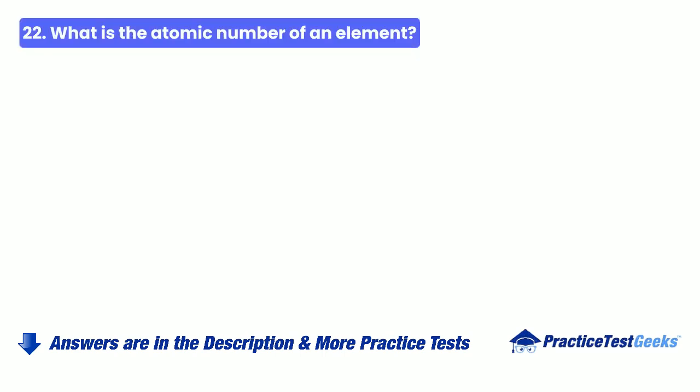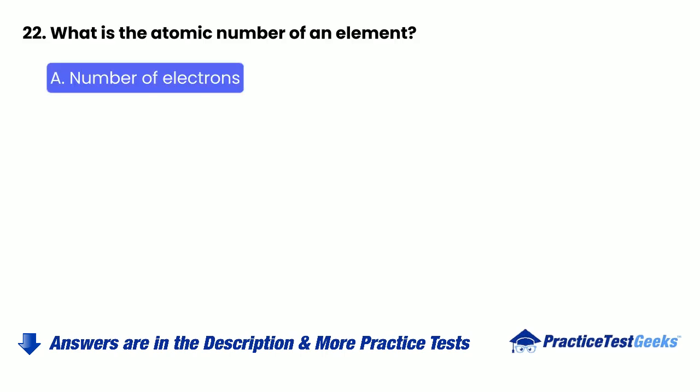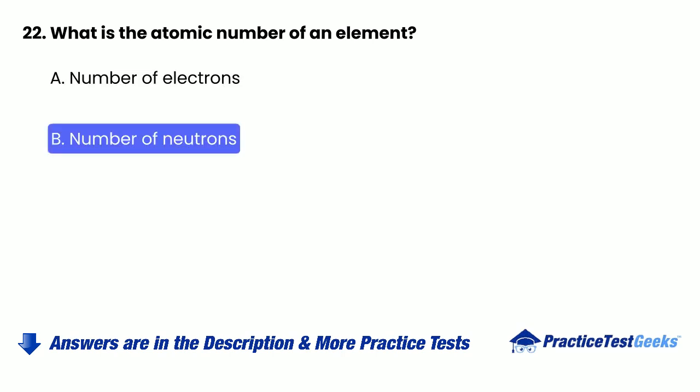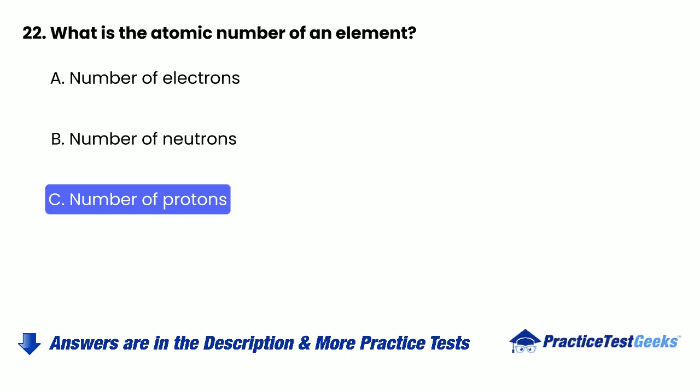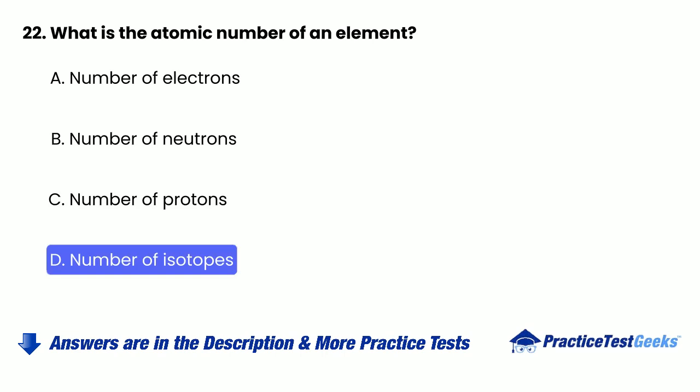Question 22: What is the atomic number of an element? A. Number of electrons. B. Number of neutrons. C. Number of protons. D. Number of isotopes.